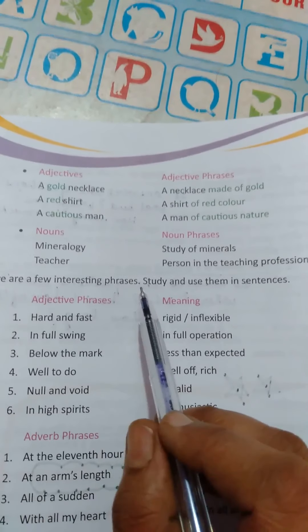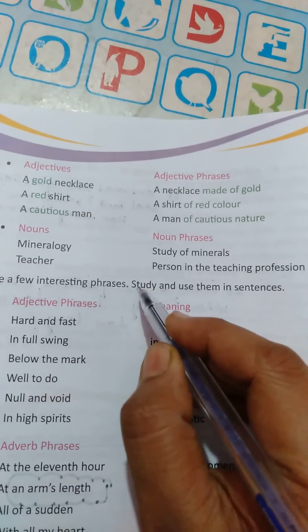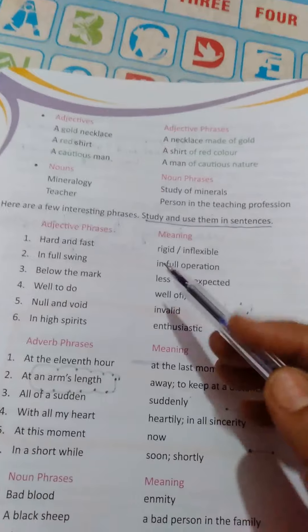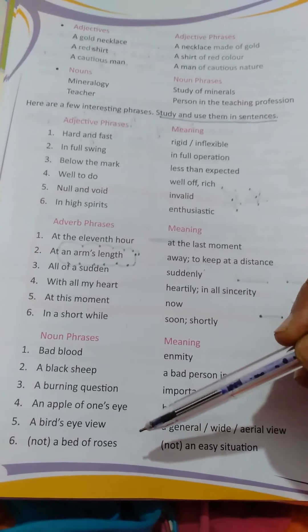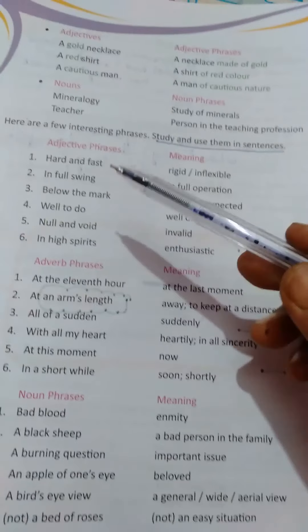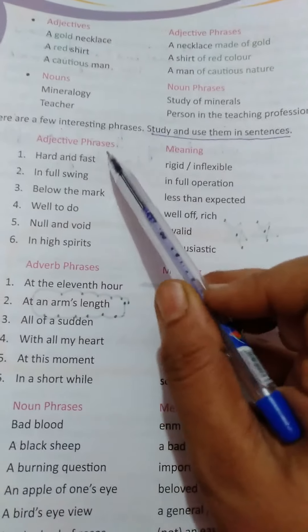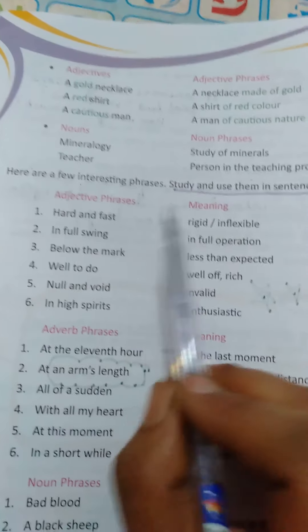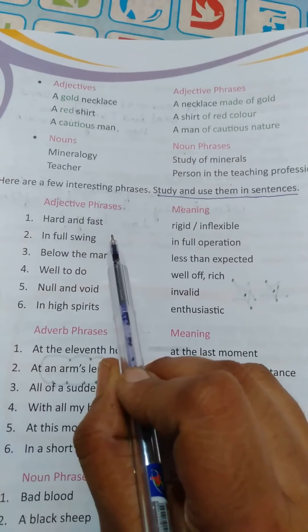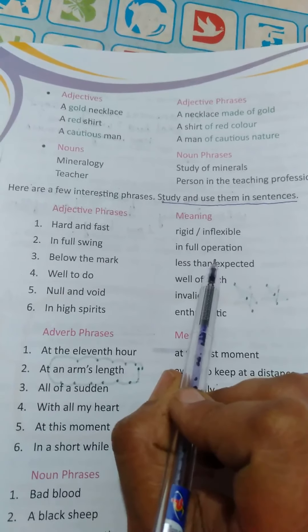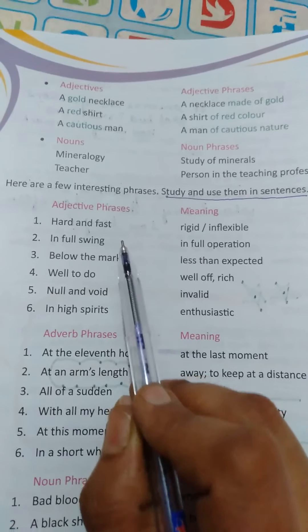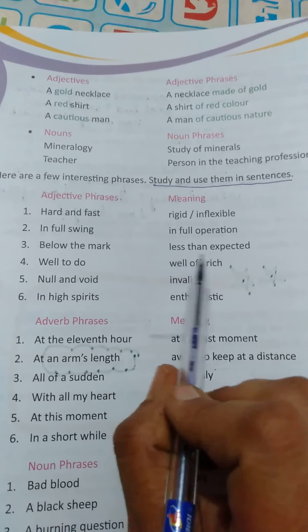Here are a few interesting phrases — study and use them in sentences. This is something you will use when writing essays and letters to make a difference from others. They have given meanings on one side and phrases on the other. Hard and fast means rigid or inflexible. In full swing means in full operation. Below the mark means less than expected.